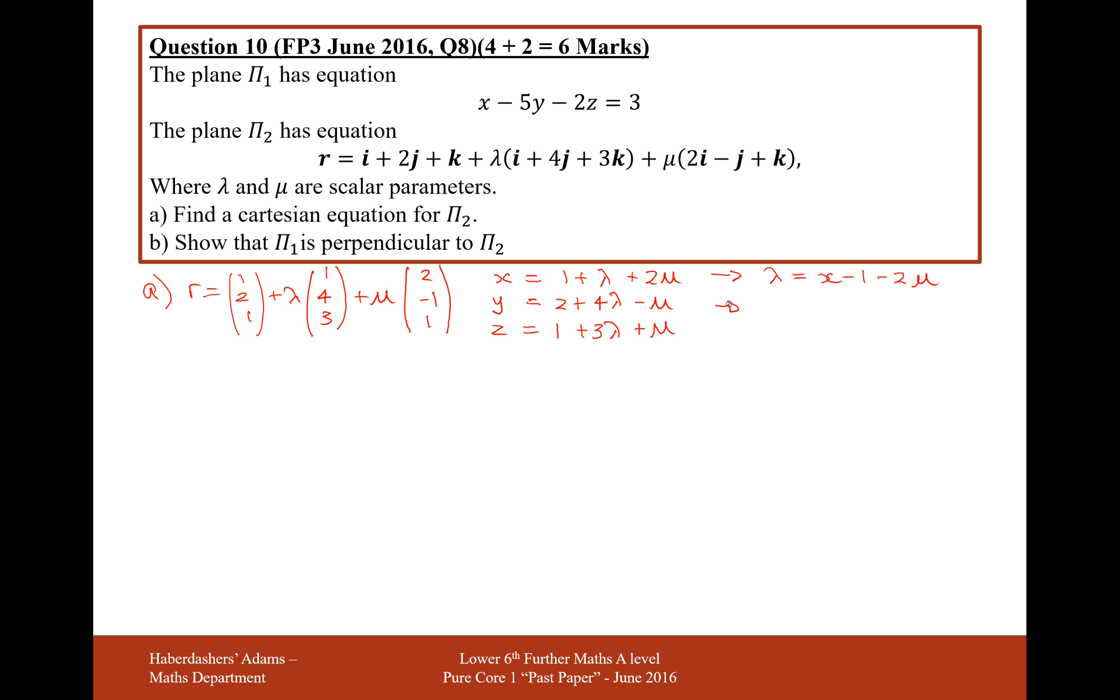So in the second equation, I'm going to get y equals 2 plus 4 times λ, so it's 4 lots of all of this: 4x minus 4 minus 8μ, and take away another μ. And on this third equation here, it's going to be z equals 1 plus 3λ, so 3x minus 3 minus 6μ and plus another μ.